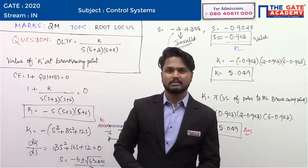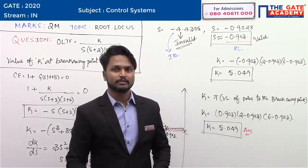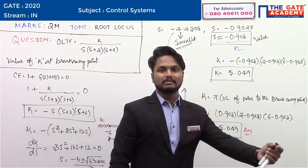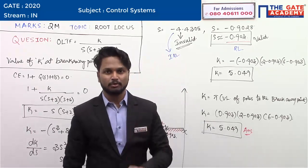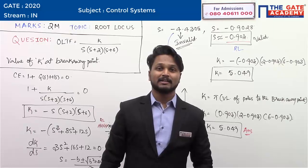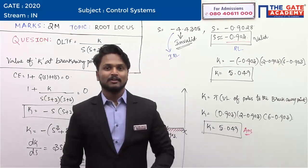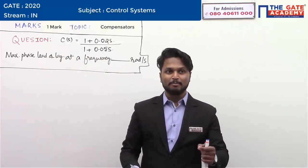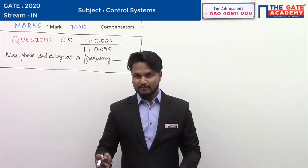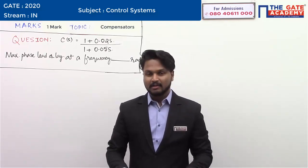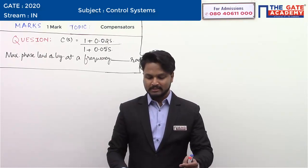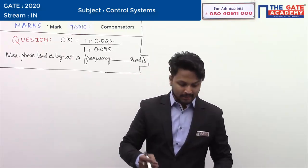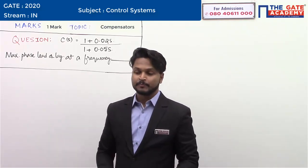The answer for this question is K = 5.049. There are numerous possibilities to solve a question — the student who finds the shortest approach will succeed with a greater score. Let us look at the next question on compensators and controllers.